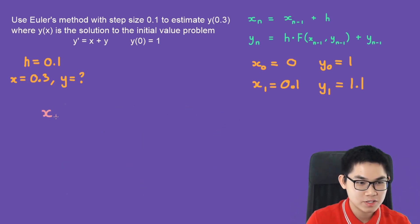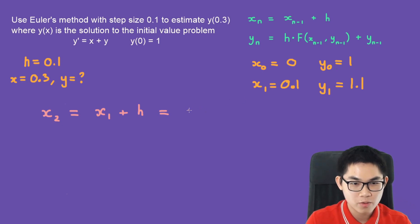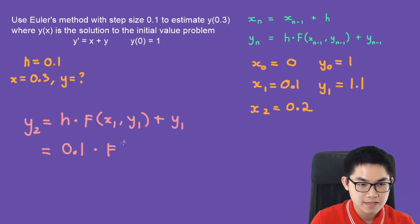What is x2? Well, x2 is x1 plus h. So we are drawing our second line. And x1 is 0.1 plus 0.1. And that is 0.2. We calculate y2. And y2 is h times f(x1, y1) plus y1. And h is 0.1 times f, x1 is 0.1. Y1 is 1.1 plus y1, which is also 1.1.